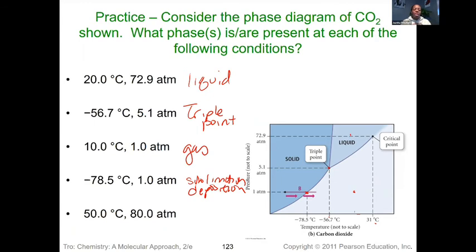And then last but not least, if we're dealing with 50 degrees and 80 atmospheres, well 50 degrees is somewhere out here, 80 atmospheres is somewhere up here, so now we're outside of that critical point, and so that's when we know we're dealing with supercritical fluids. Okay, so very straightforward when it comes to our phase diagrams.